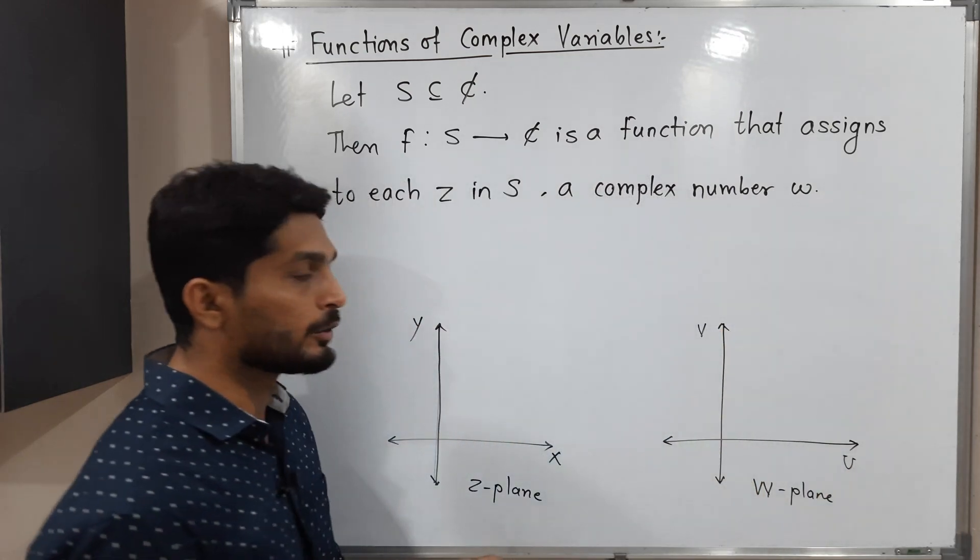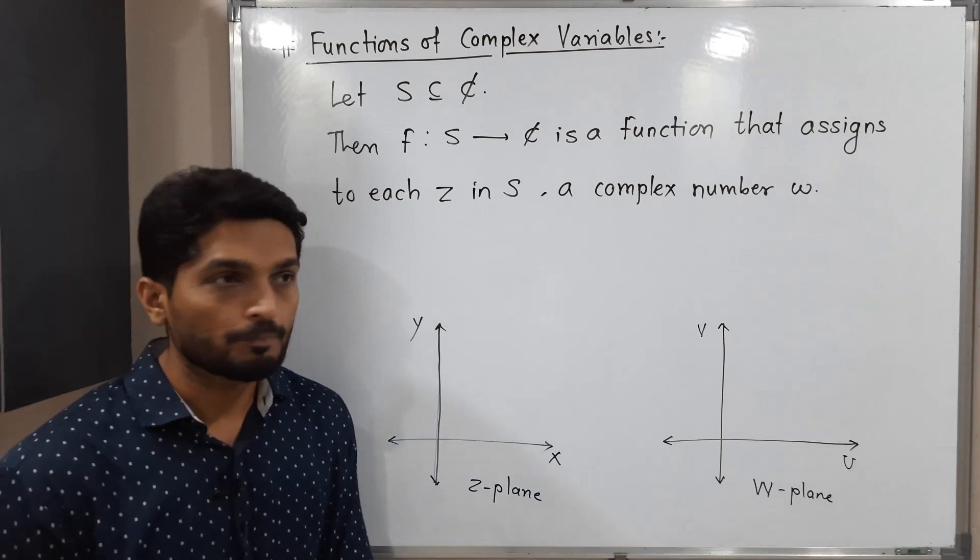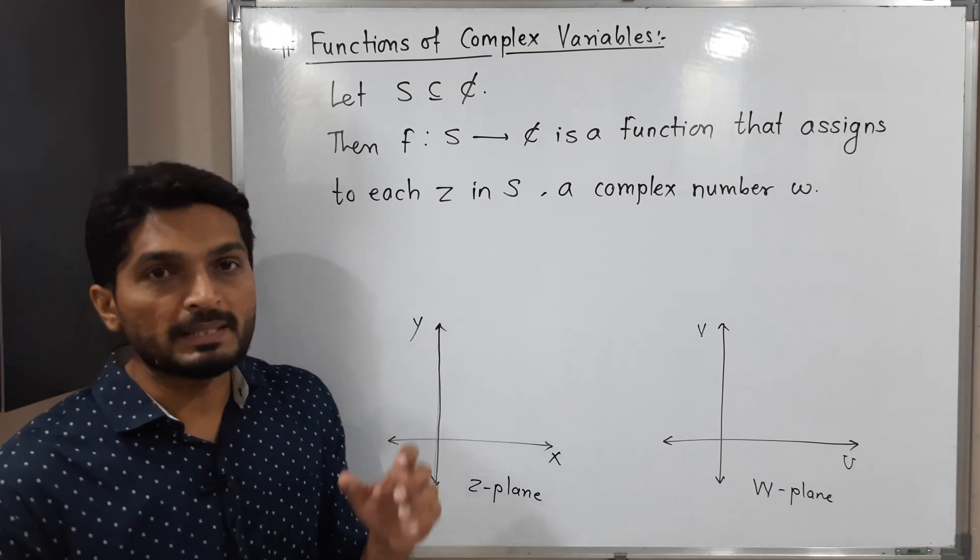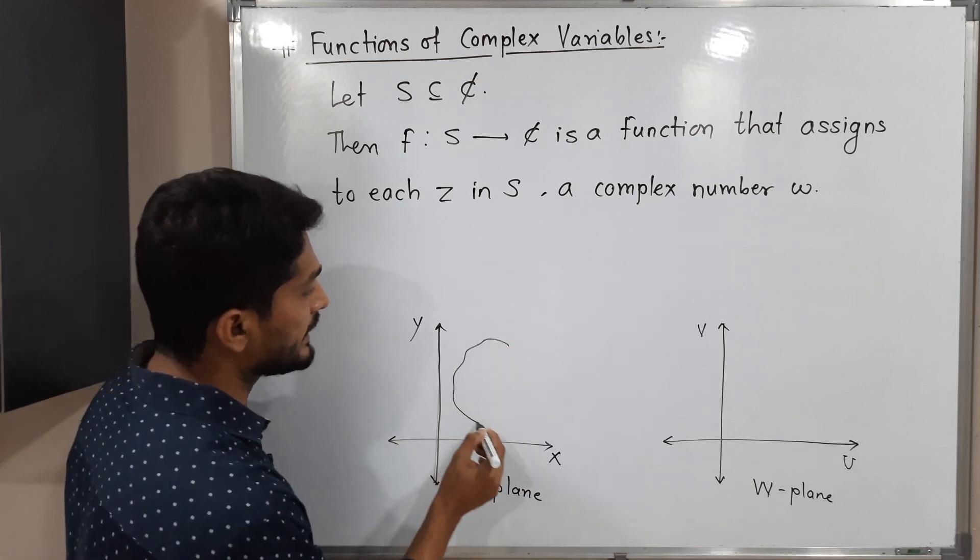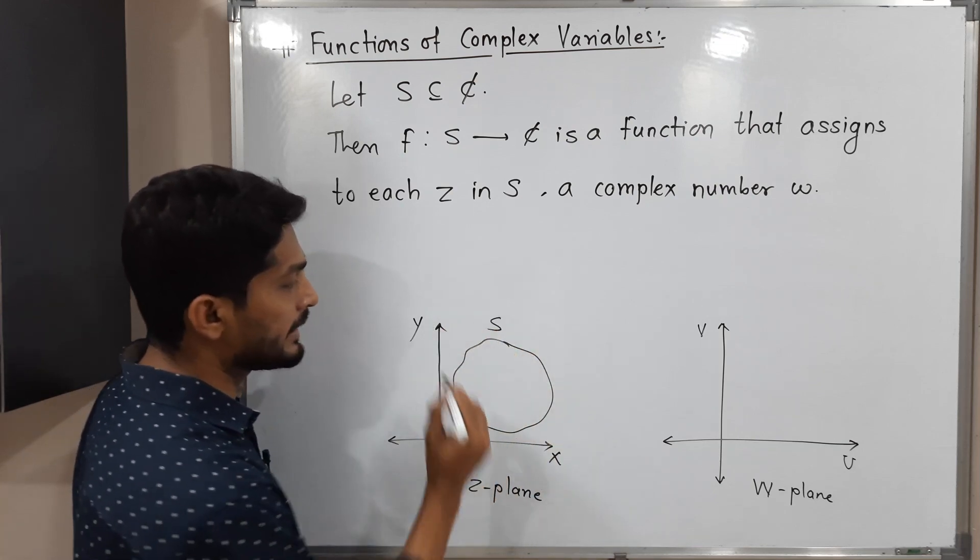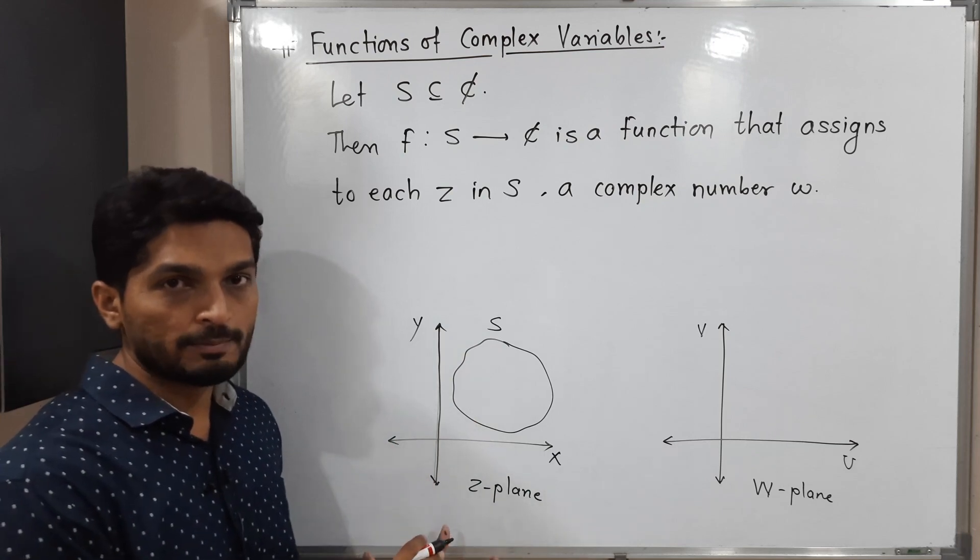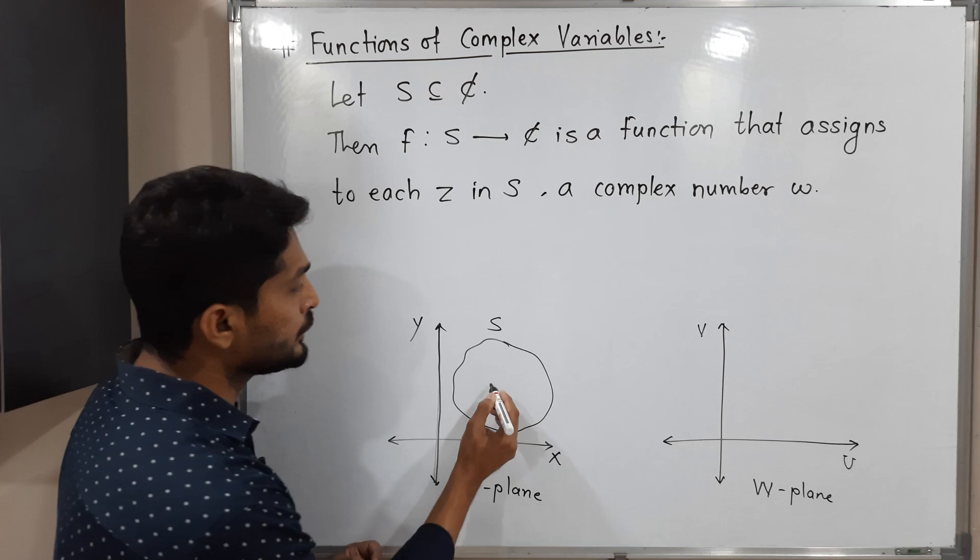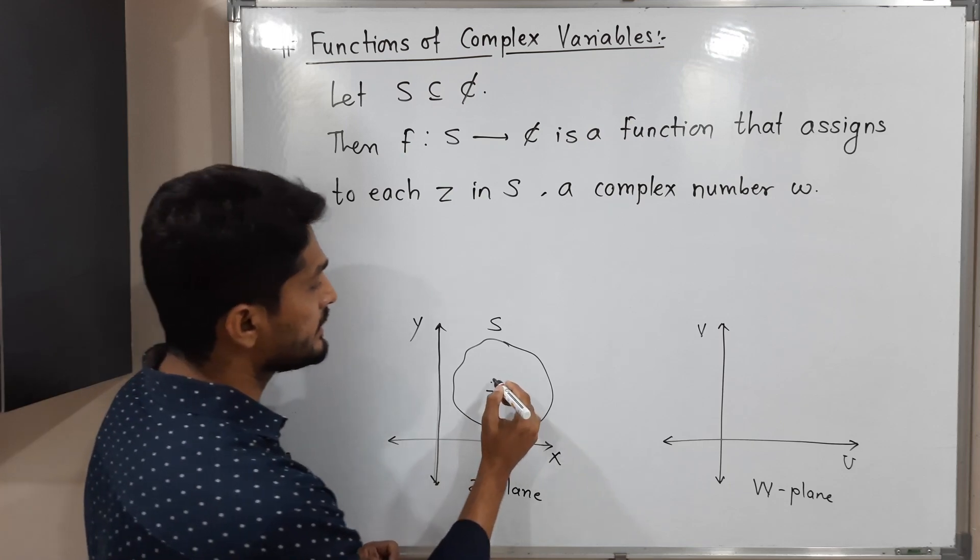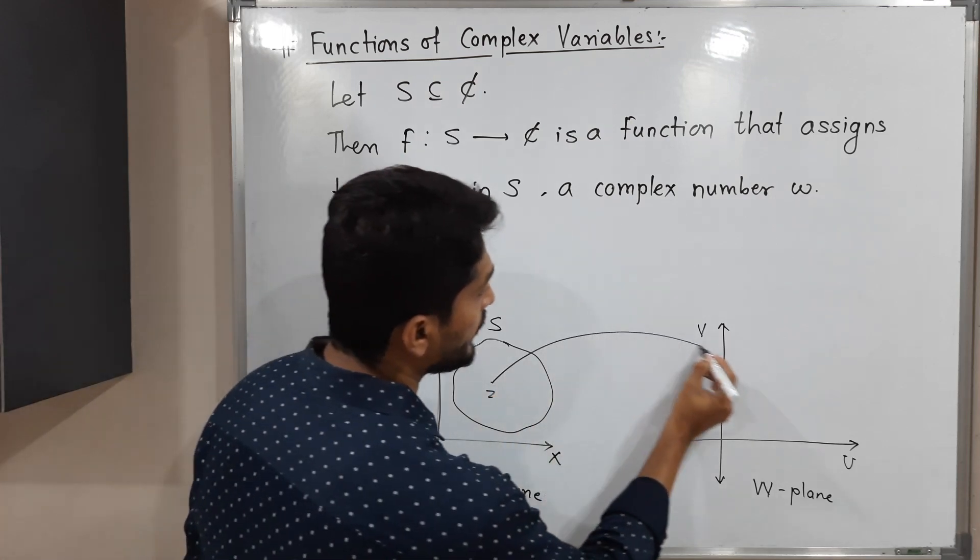Here S is basically a subset of the complex plane. Suppose we have a set S like this—this is S, which is a subset of the complex plane, or you can say a subset of Z. For each point Z in S, there is one point in the W complex plane.